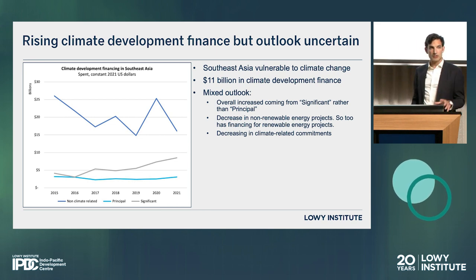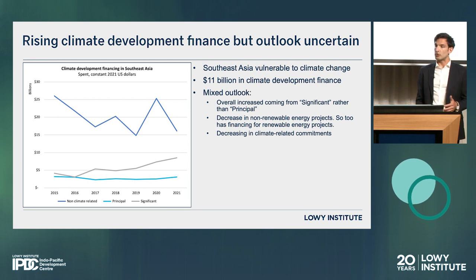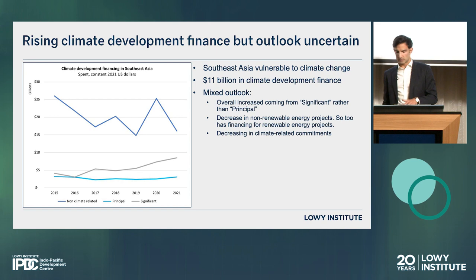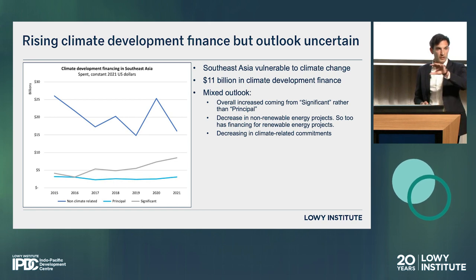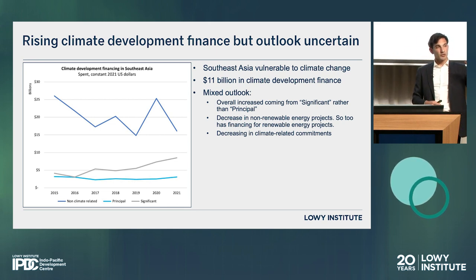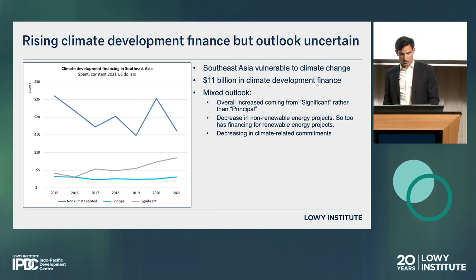With respect to the energy transition, we've seen a decrease in non-renewable energy projects in Southeast Asia — that's the good news. But we've also seen a decrease in renewable energy projects. In a way, this comes from the fact that energy projects overall across the board have decreased in Southeast Asia, which is at odds with the region's need for more and cleaner energy. The third point is that while the disbursement of climate projects has increased, when we look at commitments — which gives an indication of future disbursement outlook on climate — commitment on climate finance has actually been decreasing over the years. This tells us there is a risk that we might see less and less climate development financing in the future, making the outlook for climate development finance uncertain.